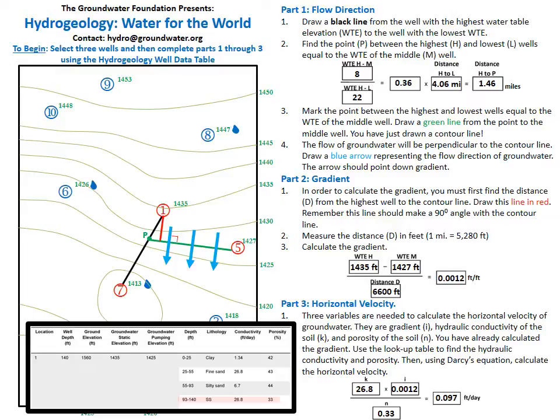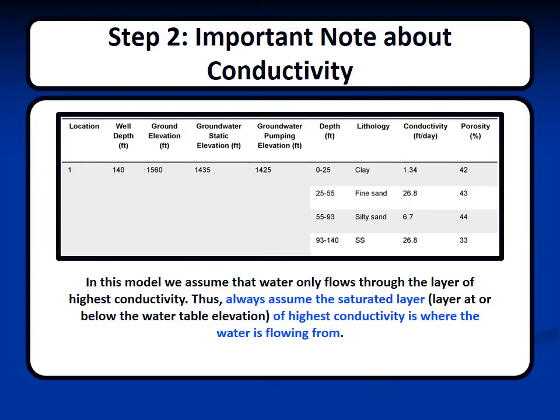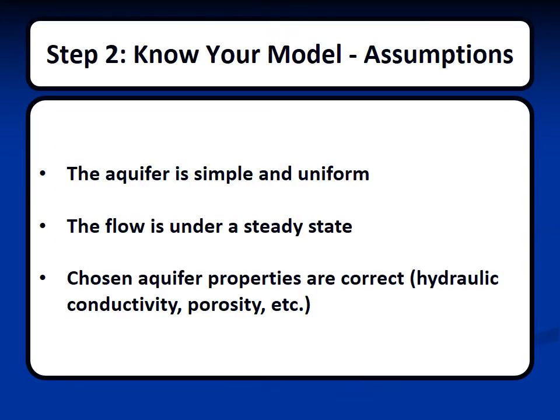We have now successfully calculated groundwater flow in both static and non-static conditions. To reiterate: in this model we assume that water only flows through the layer of highest conductivity. Thus, you should always assume that the saturated layer of highest conductivity is where the water is flowing from, and use the corresponding conductivity and porosity in your calculations. You now know how the model works, what inputs it requires, and what outputs it gives you. The model's assumptions are: first, the aquifer is simple and uniform; second, the flow is under a steady state; and finally, the chosen aquifer properties such as hydraulic conductivity and porosity are correct.